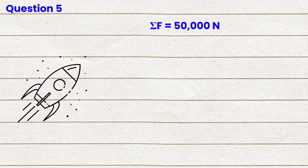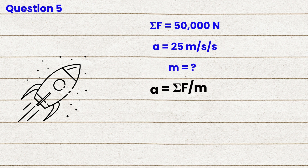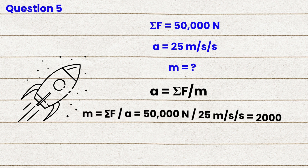Question 5. A rocket engine exerts a net force of 50,000 newtons, and the rocket accelerates at 25 meters per second per second. What is the mass of the rocket? Rearranging Newton's second law, mass equals net force divided by acceleration, which equals 50,000 newtons divided by 25 meters per second per second, and that equals 2,000 kilograms.